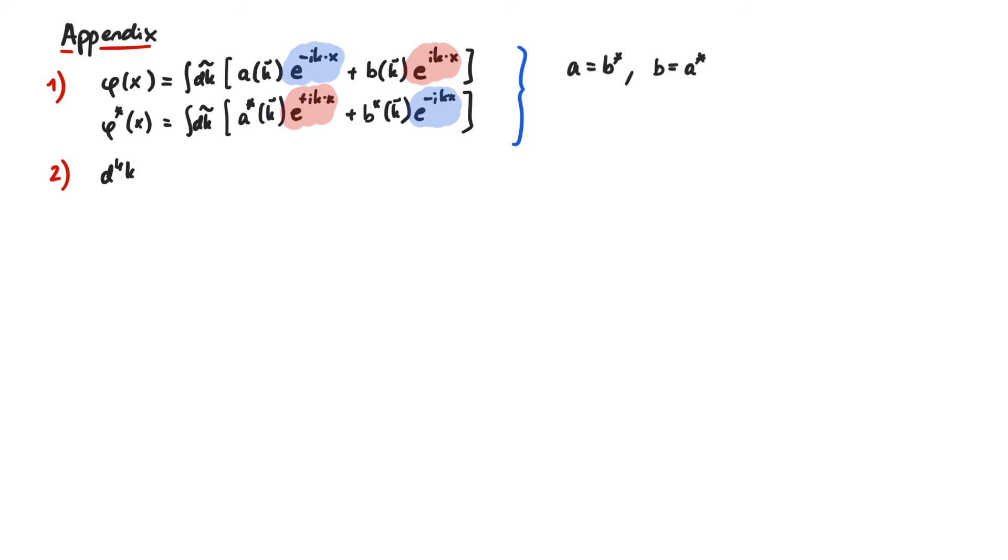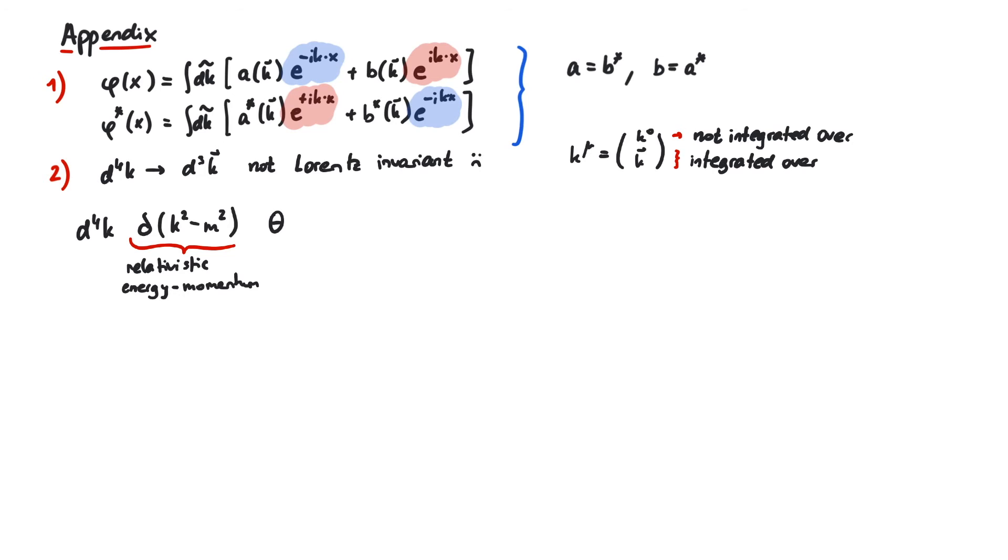Second, the Lorentz invariant integration measure. The motivation goes like this. We saw that k0 is not independent from k, so it makes no sense to integrate over k0. This leaves the integral over d3k, which is not Lorentz invariant because it treats some parts of a 4 vector different than the others. So we want to find a Lorentz invariant way of integrating over d3k. Here we can use the following trick. Let's start with d4k again and add a delta function of k squared minus m squared. This ensures the relativistic energy momentum relation. Next, we add a heavy side function of k0, thus only considering positive energies. All of this is fully Lorentz invariant.